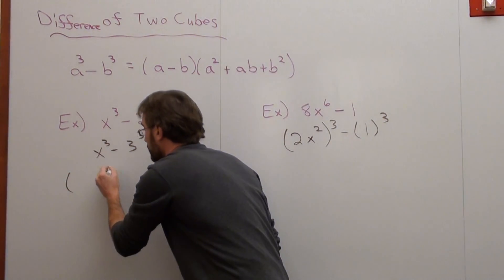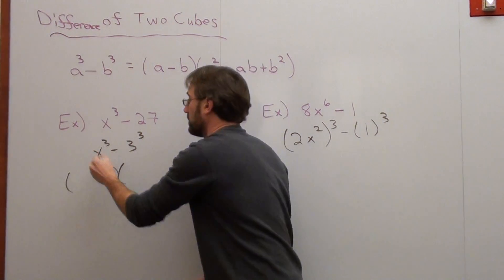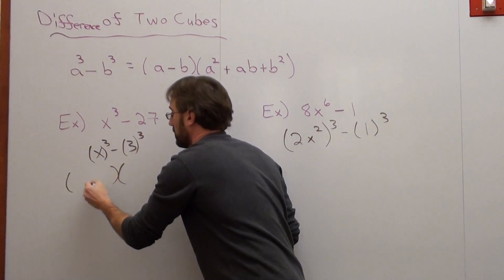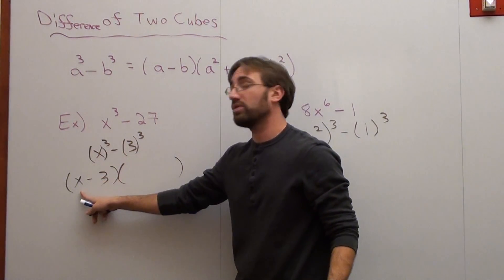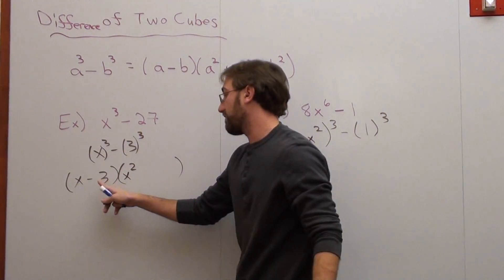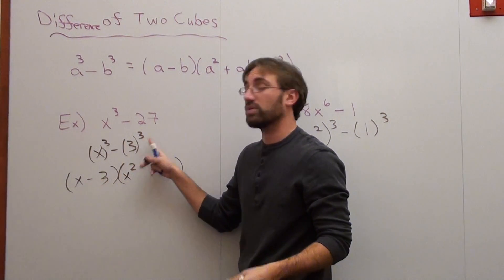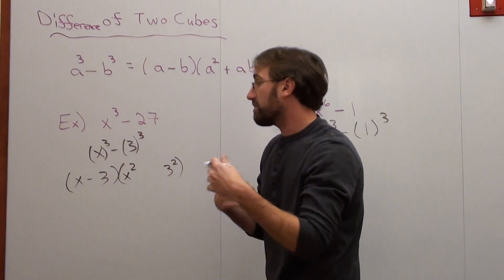So if I want to factor this bad boy, I take my a term, which is just x, subtract it by just my b term, which is 3. Now, how do I get x cubed from only x? x times x squared will work, and I have 3 to the first, and I need 3 to the third, so it's 3 to the second.